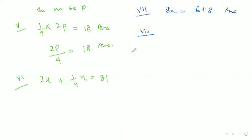For the eighth part, let the number be c. What is given to us: 1/2 less than twice the number. So twice of c minus 1/2 equals 3. Our equation is 2c - 1/2 = 3.